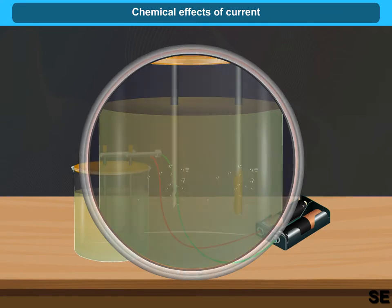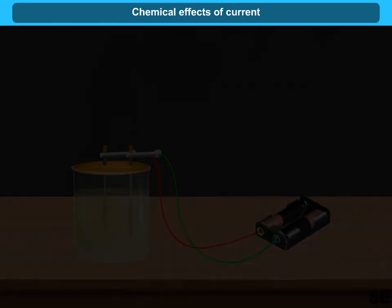For different solutions, different effects may be seen. We can see chemical effects of current on fruits and vegetables also. Let us do an activity to understand this.